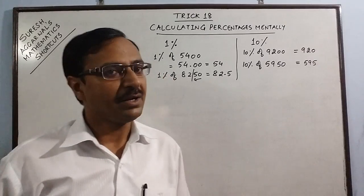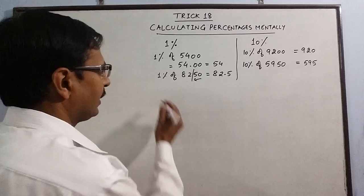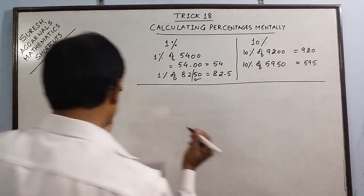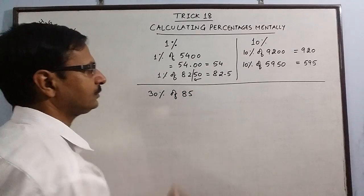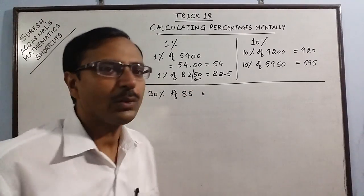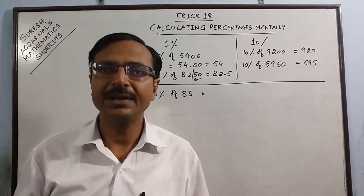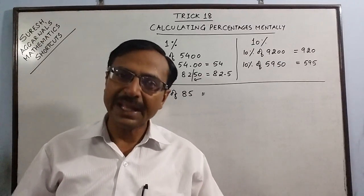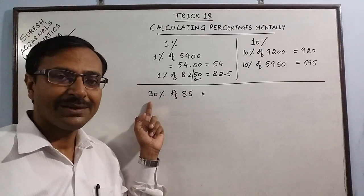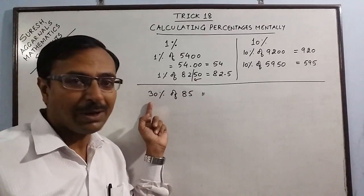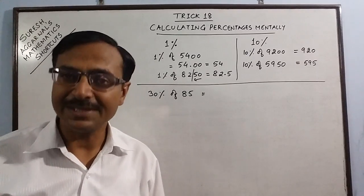Let us now deal with different percentages other than 1% and 10%. Now suppose we have 30% of a quantity, say 85. Now when you have to calculate 30%, then you have to see 30% as 3 times of 10%. So if you think of 30% then you will have a problem, but if you think of 30% as 3 times 10%, then it is easy.